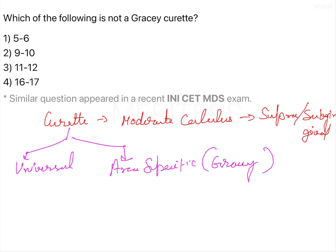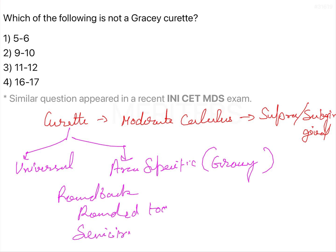All curettes share the same common elements. The three very common elements present in all curettes are: they have a round back, a rounded toe, and a semicircular cross section. These are the features which are common to all curettes.